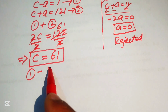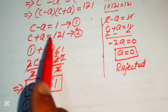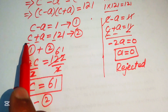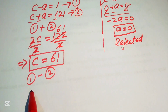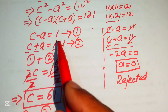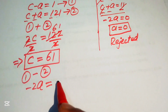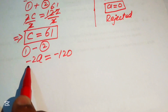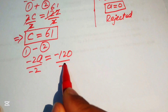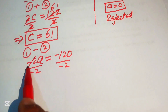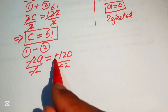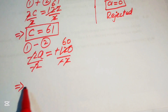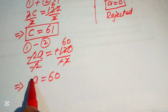To find a, we subtract equation 1 from equation 2. The c terms cancel, leaving −a − a = −2a = 1 − 121 = −120. Dividing both sides by −2 gives a = 60.